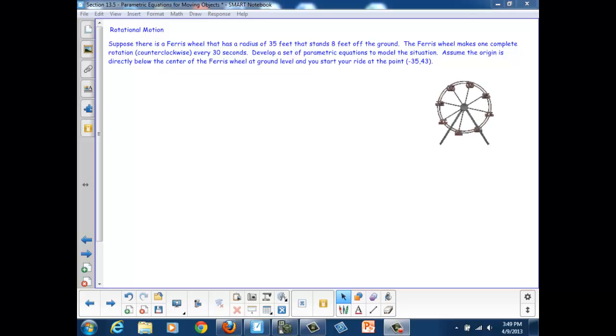Let's look at a third example, rotational motion. Suppose we have a Ferris wheel that has a radius of 35 feet that stands 8 feet off the ground. The Ferris wheel makes one complete rotation counterclockwise every 30 seconds. Develop a set of parametric equations to model the situation.